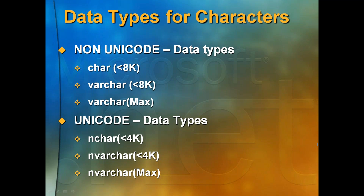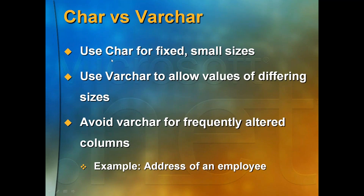It is not 400 bytes — it is 4,000 characters. 4,000 × 2 bytes per character = 8,000 bytes, which is the maximum page size. So for nchar, 4,000 characters maximum. Use char for fixed-length, small-sized data. Use varchar for variable-length values of different sizes. Avoid varchar for frequently altered columns — for example, the address of an employee.